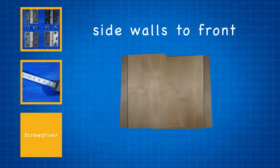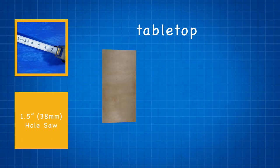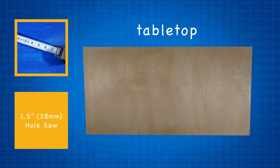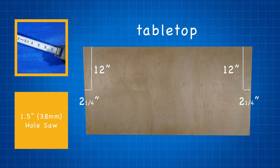Now your stand will fold up. We will need to drill two 1.5 inch holes into the tabletop so our sign holder can pass through to the holsters. Mark the centers of the holes two and a quarter inches from each end and in the middle of the board, so that's 12 inches from each long side. Cut out the two holes using your hole saw.